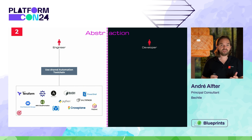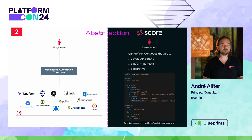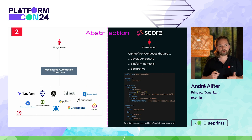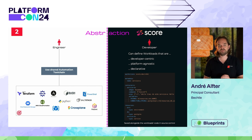Our advice is always: think of abstraction. Abstraction is not isolation — it's a friendly abstraction we recommend. Engineers can go on using the automation tool of their choice, and developers get the possibility to define their workloads. The open-source project SCORE is a really good way to do that. A developer is enabled to just define what his app needs to run properly, and the resources needed to serve that app are then provisioned by the automation the engineer provides. If you try it out, you will be amazed by the abstraction you can produce.